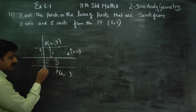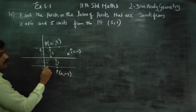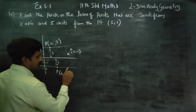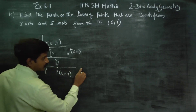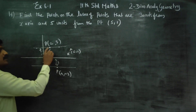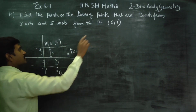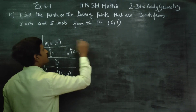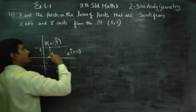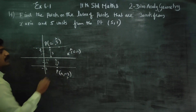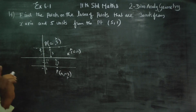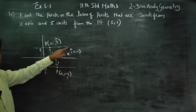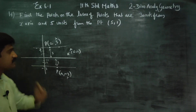So y is fixed at plus or minus 3. Points like (1, minus 3), (2, minus 3), (3, minus 3), (4, minus 3) — and above: (1, 3), (2, 3), (3, 3). So any point 3 units from the x-axis is of the form (a, 3) or (a, minus 3). The moving point is (a, 3).